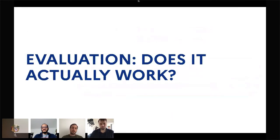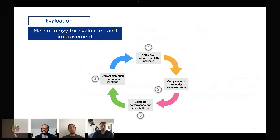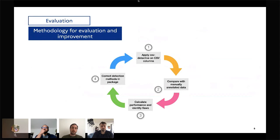The question that comes after, of course, is: does it actually work, and what do we do to evaluate how it works? What we do is apply CSV Detective on the CSV files and columns we have on data.gouv.fr. We compare the results — the predictions from CSV Detective — with manually annotated data annotated by human beings. Then we calculate some performance metrics to identify flaws, and thanks to this we can correct the detection methods and rules to try to improve CSV Detective. We repeat this cycle to check whether we achieved an actual improvement of the Python package.